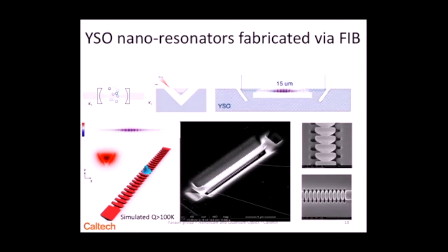This slide shows the fabrication process. In this case we use focused ion beam milling, because we are working in a bulk crystal — we don't have a membrane that allows us to make devices in the same way as silicon on insulator. First, we use the focused ion beam to define this triangular profile for the nanobeam. Then we rotate the sample, and from the top we come and make these cuts into the nanobeam. At the end, we also make these 45-degree cuts at the end of the nanobeam that allow us to couple light in via total internal reflection.